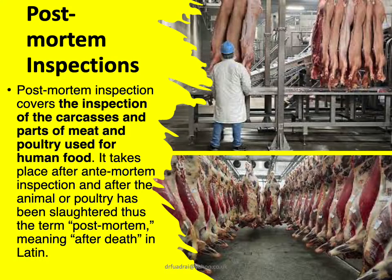Post-mortem inspection also covers the inspection of the characteristics and parts of meat and poultry used for human food. It takes place after ante-mortem inspection and after the animal or poultry has been slaughtered. Thus, the term post-mortem means 'after death' in Latin. Pictorial material has been presented so that you can easily comprehend how this inspection is done.